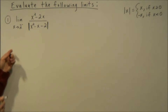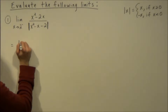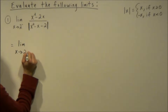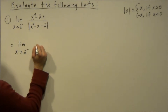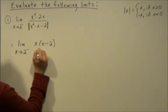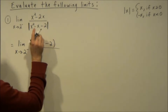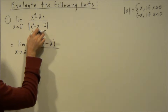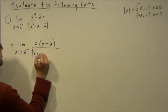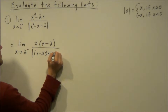For this example we can start by factoring. We'll have the limit as x approaches 2 from the left of x times (x minus 2) in the numerator over the absolute value of (x minus 2)(x plus 1).